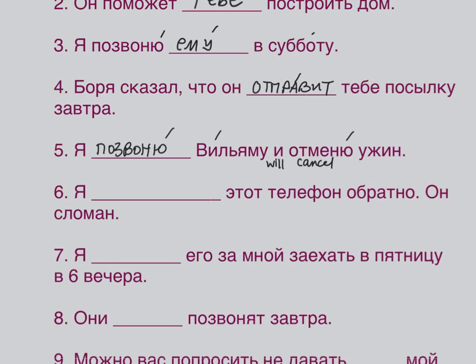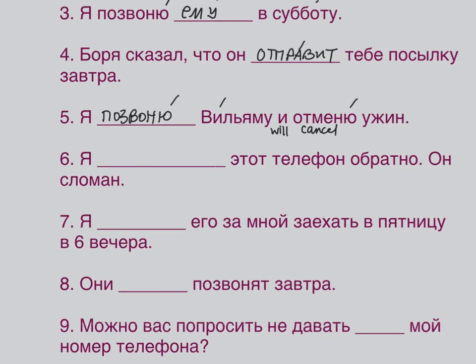Number 6: Я [verb] ЭТОТ ТЕЛЕФОН ОБРАТНО — ОН СЛОМАН. I'll return this phone back — it's broken. Can you guess the verb?